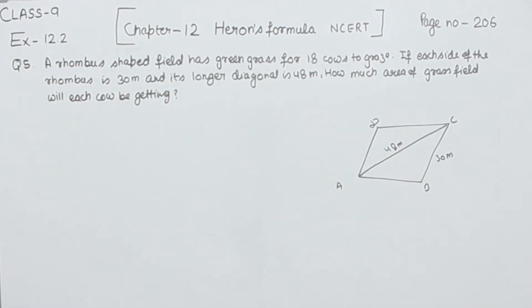A rhombus shaped field has green grass for 18 cows to graze. If each side of the rhombus is 30 meters and its longer diagonal is 48 meters, how much area of the grass field will each cow be getting?